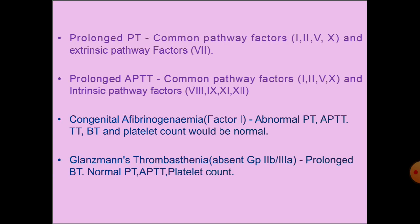In von Willebrand's disease, there is deficiency of von Willebrand factor. There is absence of glycoprotein 2b/3a, which is present on the platelet surface and is essential for platelet aggregation. Since it is absent in von Willebrand's disease, bleeding time is prolonged. PT, APTT, and platelet count would be normal.